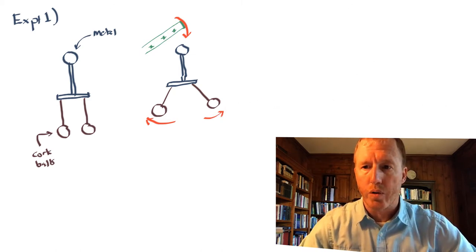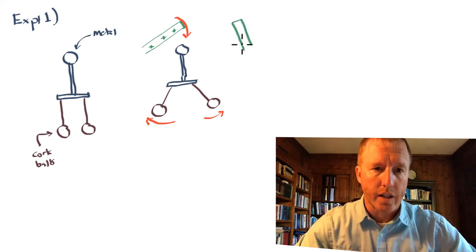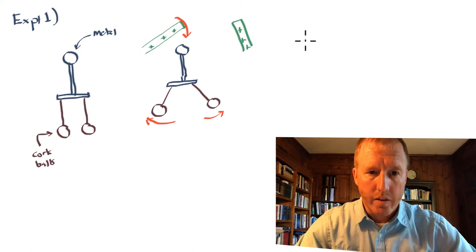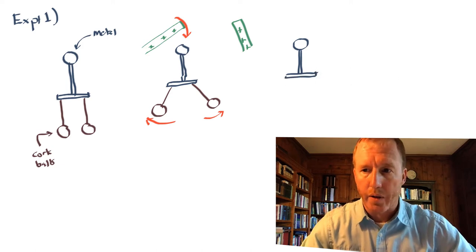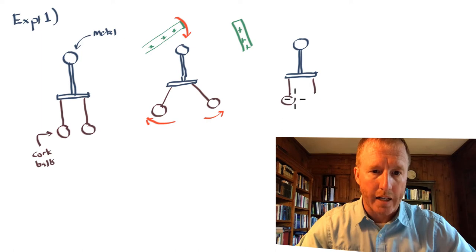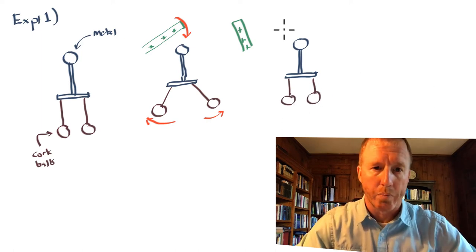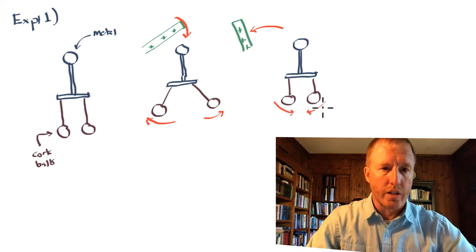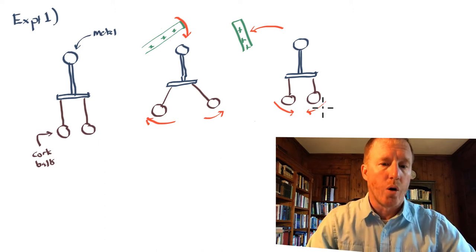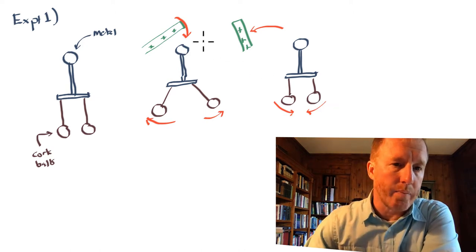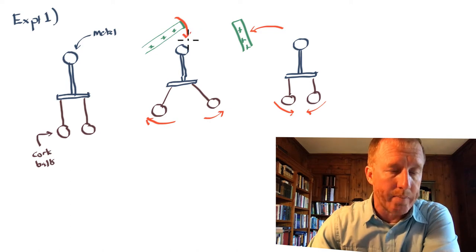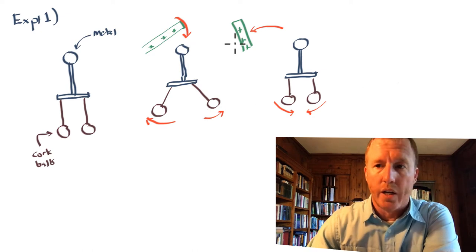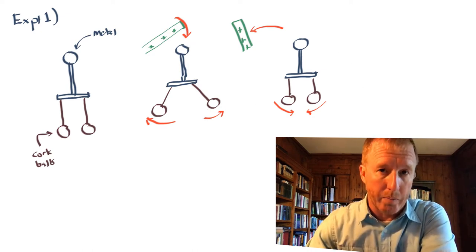And then if you remove this glass rod from the vicinity of this object, these cork balls will swing back toward each other and are no longer repelled. So you bring this nearby, they swing apart from each other. Why does this happen? Well, he says it's a bit confusing because you're not actually touching this to it — all you're doing is bringing it nearby — and when you bring it nearby, these repel each other.